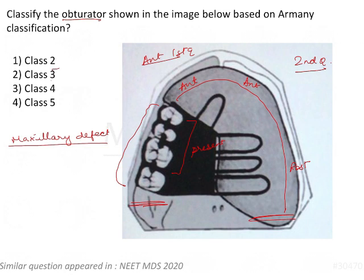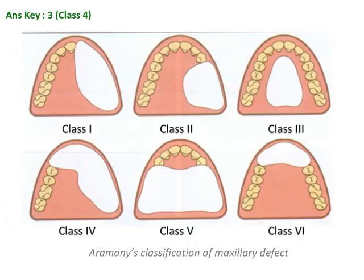The options are Class 2, 3, 4, and 5. This is a theoretical question, so we will have to revise the classification. Let's have a quick look at the Aramani classification.